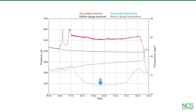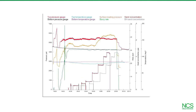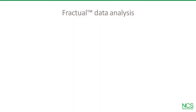Further confirming complete isolation, the top temperature gauge registers only the cooling effect of the frack fluid above the bridge plug, while the bottom gauge shows only the gradual warm-back of the wellbore below. This chart for a single stage combines gauge data with all the surface frack data to give you a clear picture of how the frack progressed as sand concentration was increased.